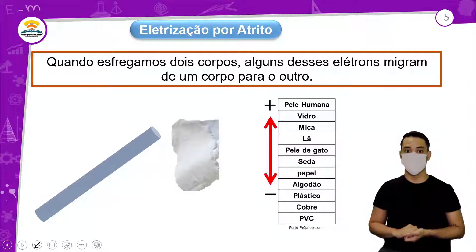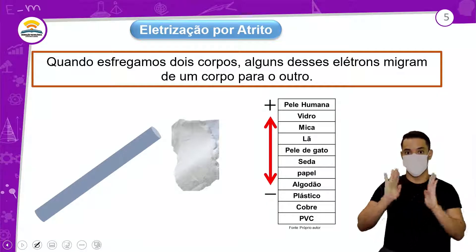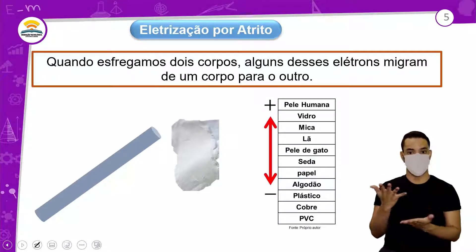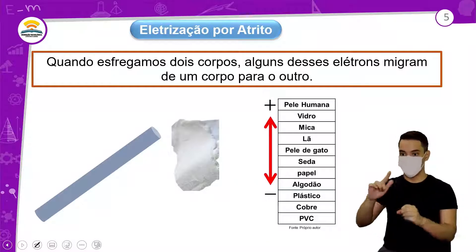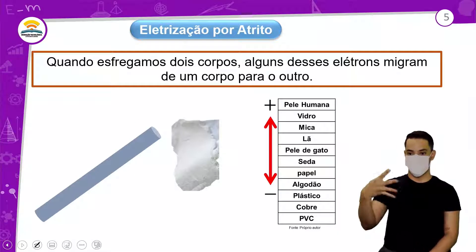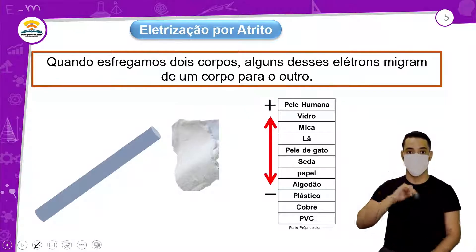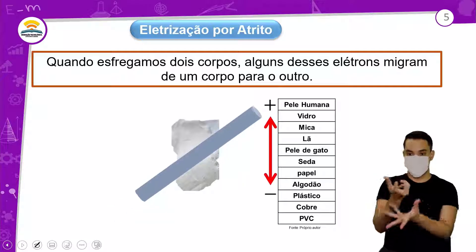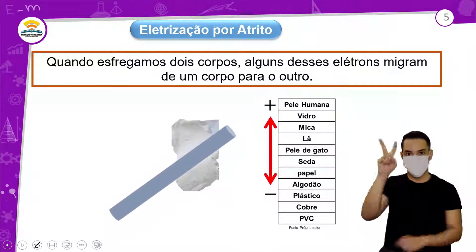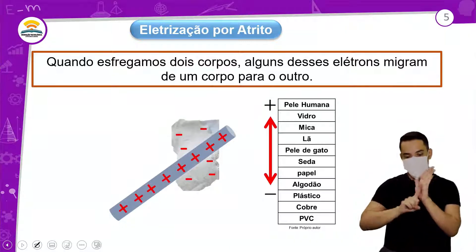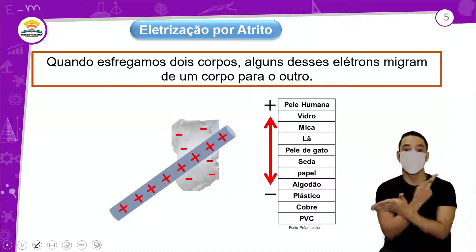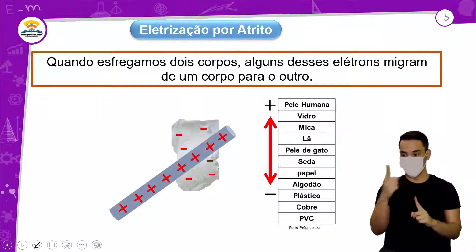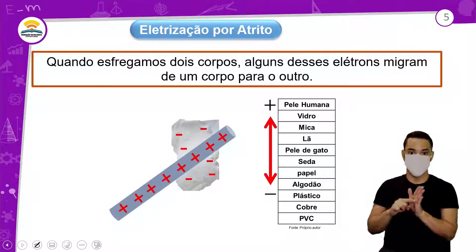A eletrização por atrito, como o nome já diz, ocorre quando esfregamos dois corpos. Alguns elétrons migram, saem de um corpo para o outro. Aqui nós temos uma tabela triboelétrica que indica qual material tem mais facilidade de doar elétrons e qual tem mais facilidade de receber. No processo de atrito, a barra cedeu elétrons para o pedaço — pode ser um pano, uma lã, papel toalha ou papel higiênico.